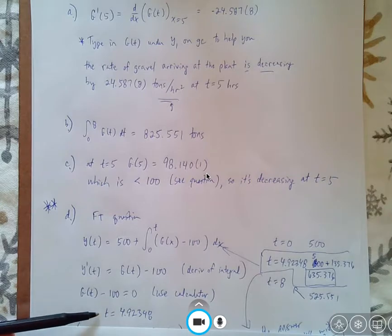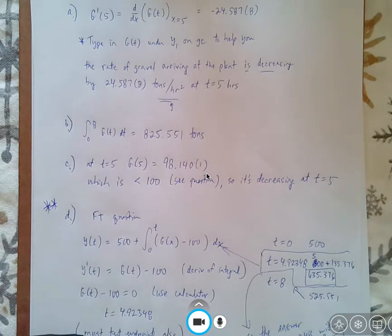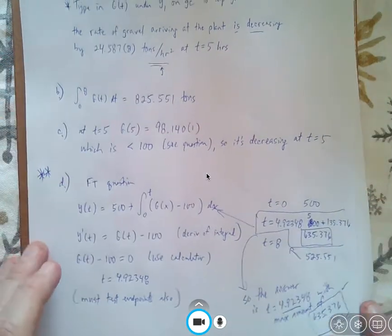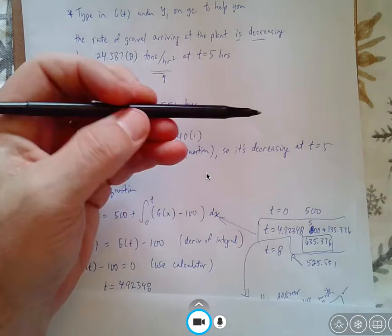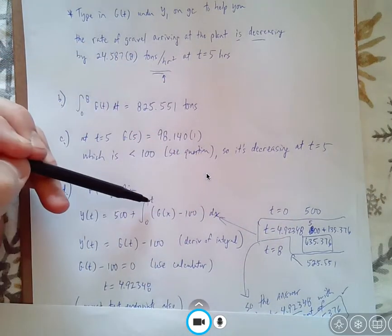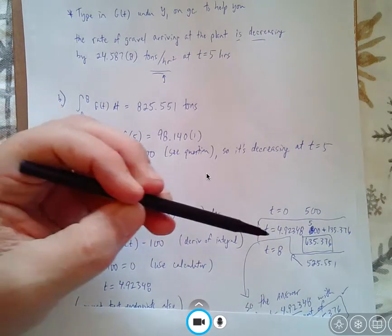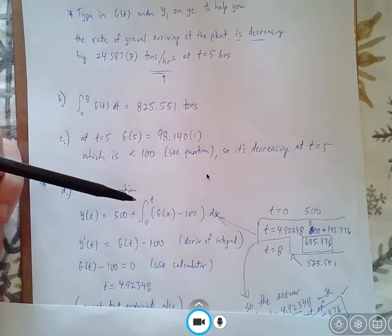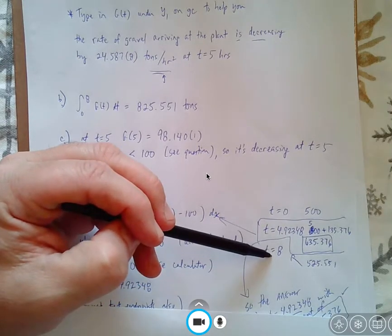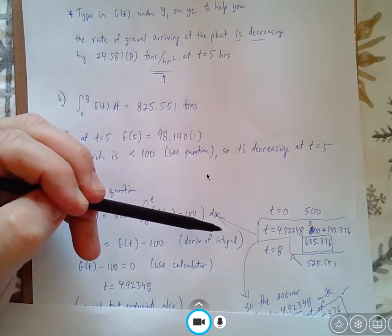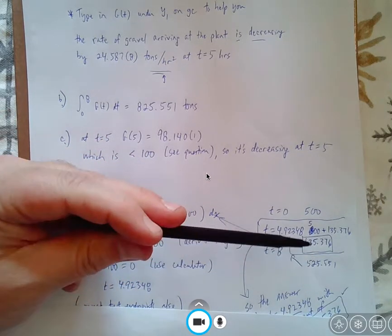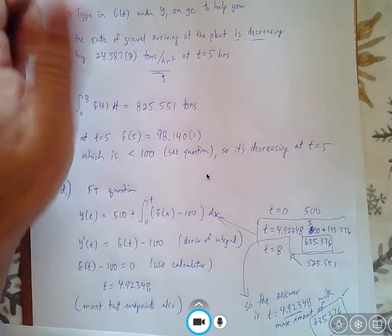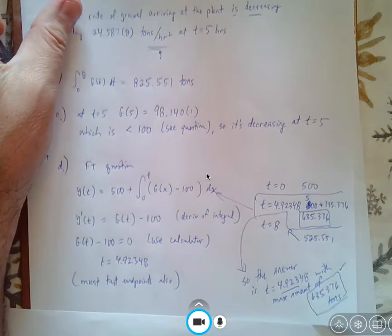But the key is that you might think that's the only answer, but you also have to test the endpoints to get full credit. So by testing the whole endpoints, remember at times 0, there's 500. That's what's given in the question. I would put 4.9238 into this integral and type this out. And if you type this out, you get 635 point whatever. And then if you put 8 in here for t, so put the 8 in for the t, and just type it out, you would get 525.551. So what they're saying is at this particular time, you do have this amount of tons. So that's a really hard question, quite honestly. So I just wanted to show you how it was done.